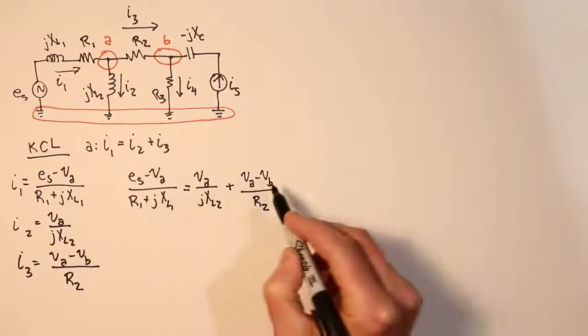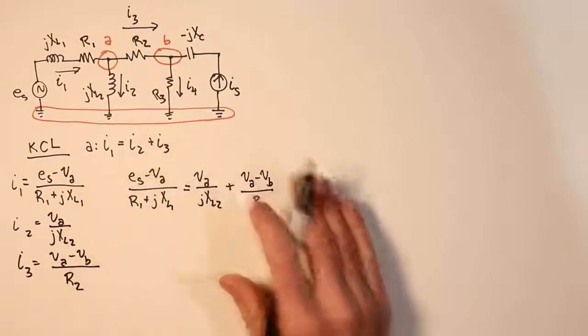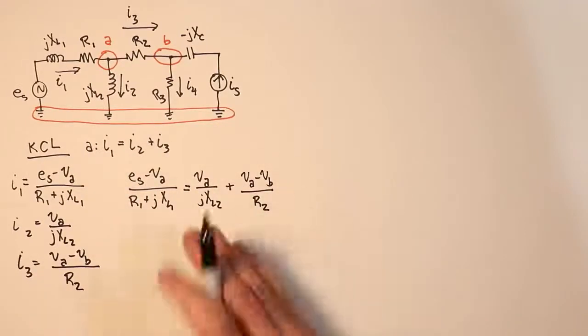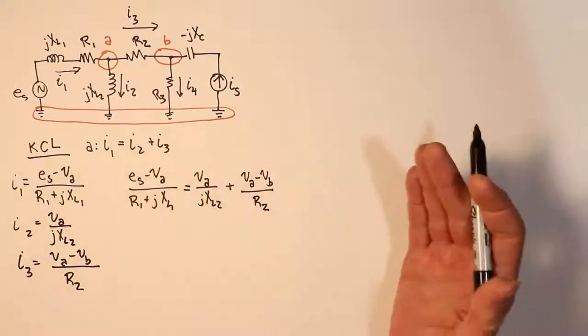Now, I'm going to substitute these into this equation. The VA and the VB are what we're looking for. Those are our unknowns. So I'm going to rearrange this, collect up some terms and so forth, put my constants on one side of the equal sign, and then my coefficients with my unknowns on the other side.